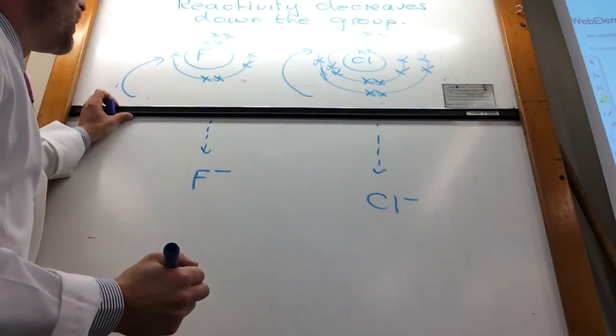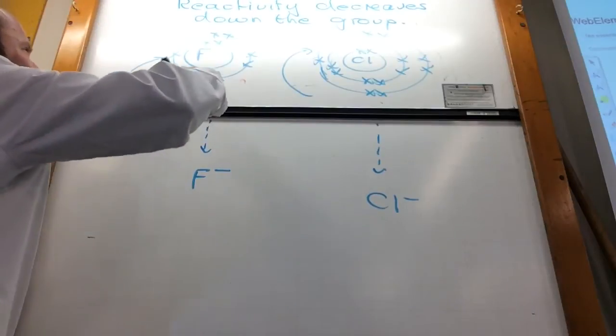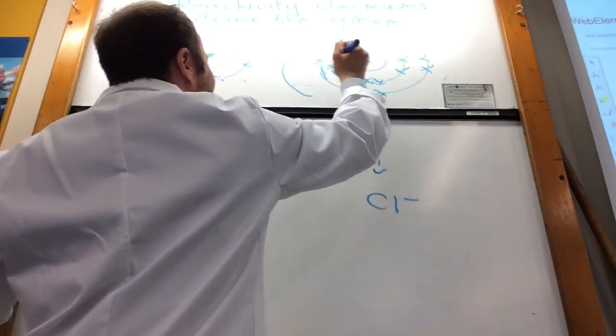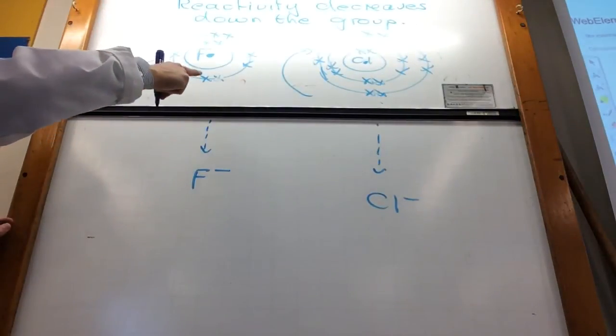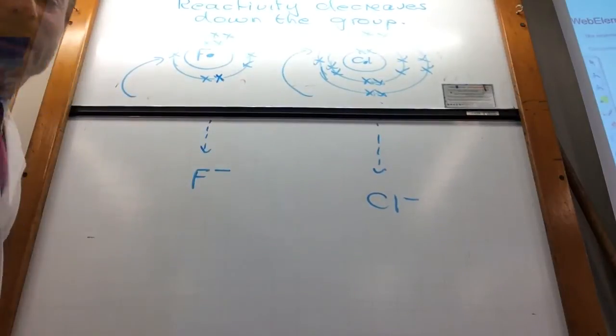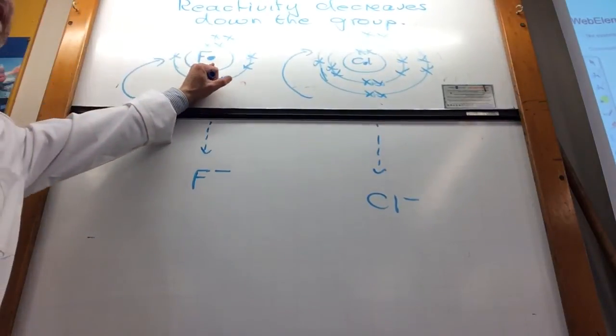How can we do that? Well, my nucleus is here for both of them. That's what's attracting my electron in each time. So as that comes in, what's attracting it here?